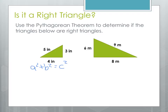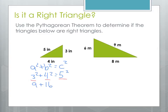We'll start plugging in our numbers. Our legs are 3 and 4, so we'll plug those in for A and B, and our hypotenuse is 5, so we'll plug that in for C. We work each side of the equation independently. 3 squared is 9, plus 4 squared is 16, equals 5 squared which is 25. Then 9 plus 16 is 25, which equals 25. That's true, so yes, this is a right triangle.